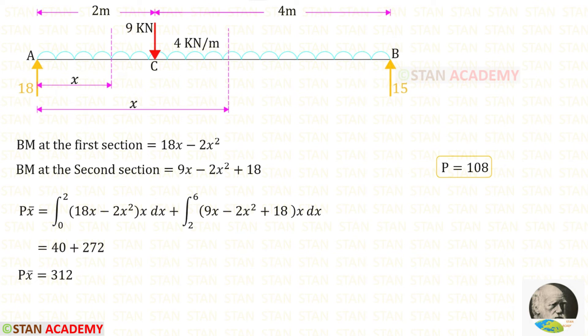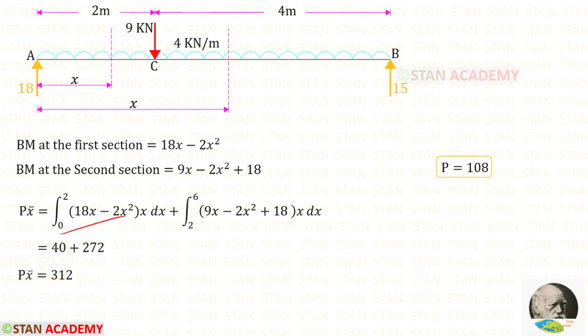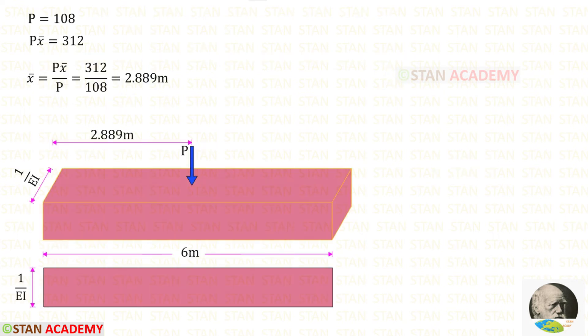In the analogous column, the resultant P is equal to the area of the bending moment diagram, which we have found to be 108. Now let us find P·x̄. For that, in the integrations we multiply by x. When we integrate we get 40 for the first part and 272 for the second part. Adding both gives P·x̄ = 312.